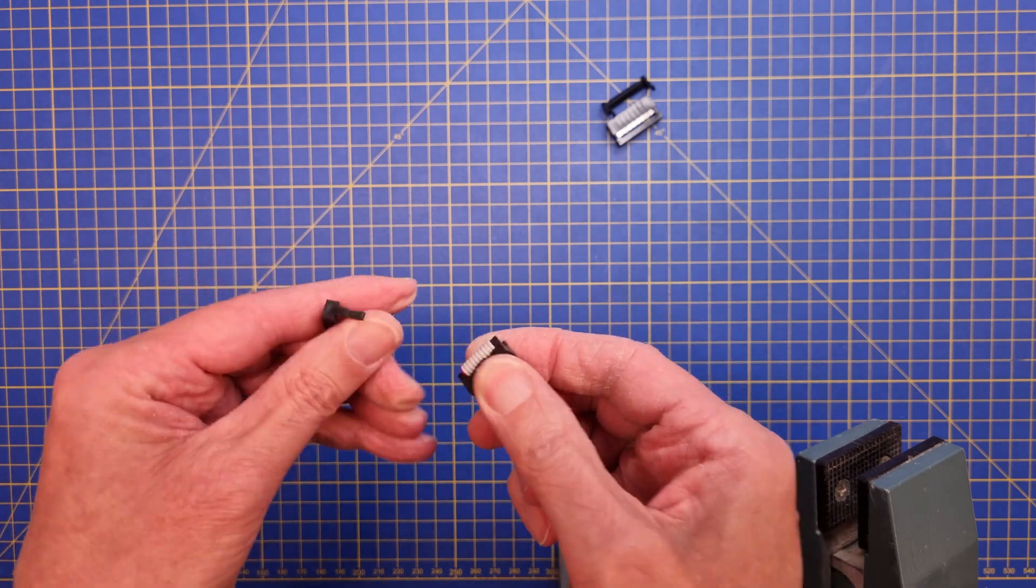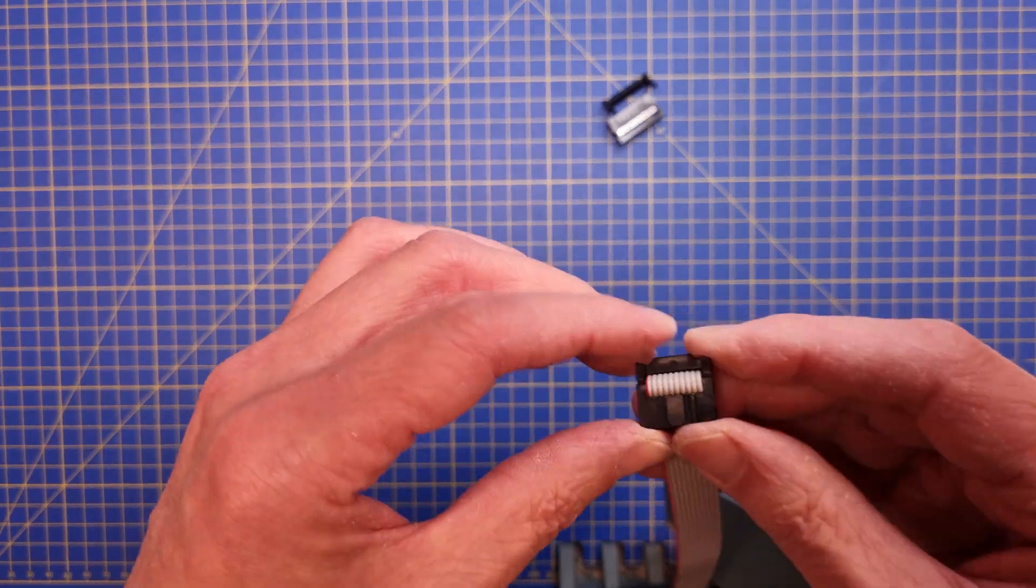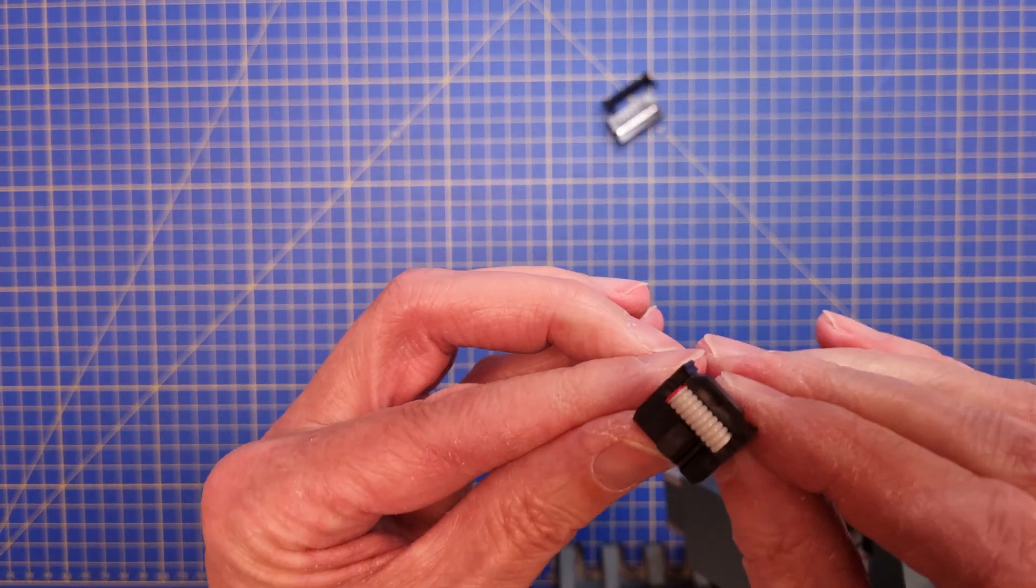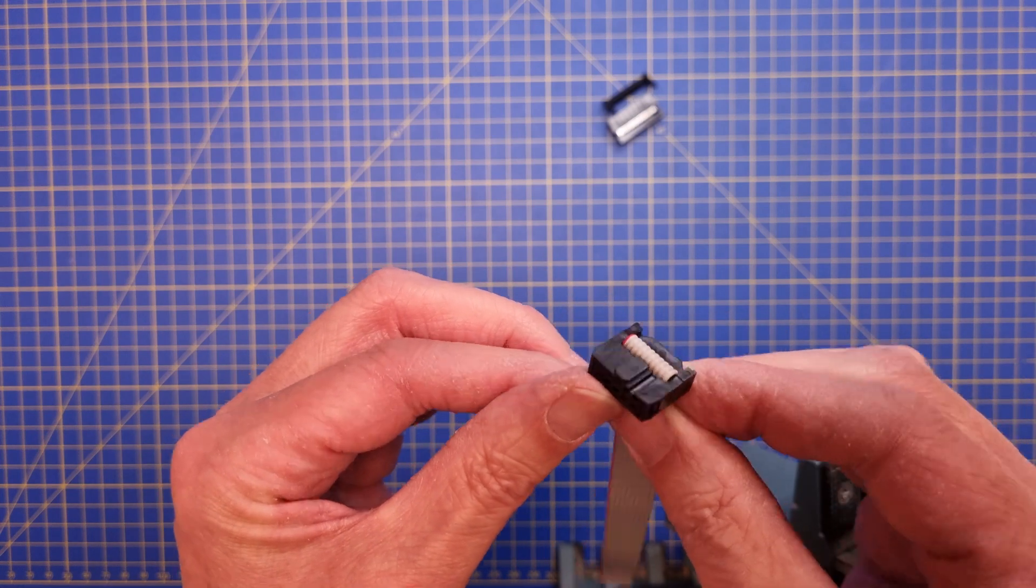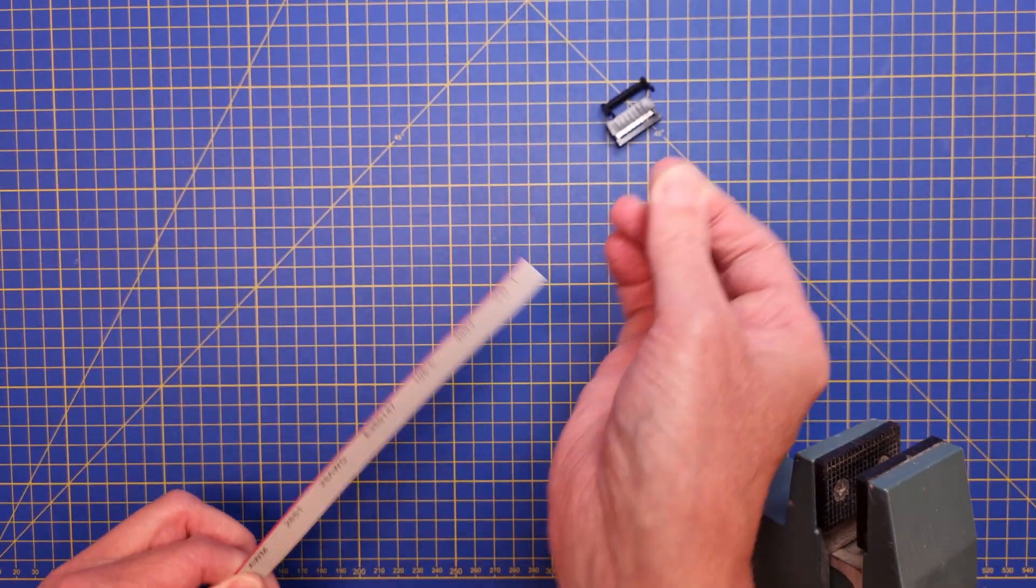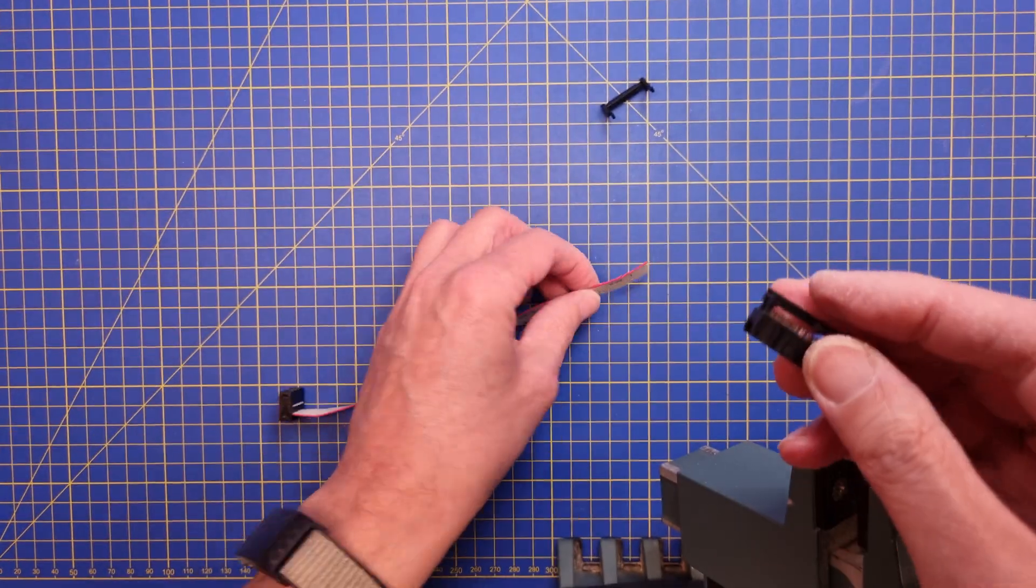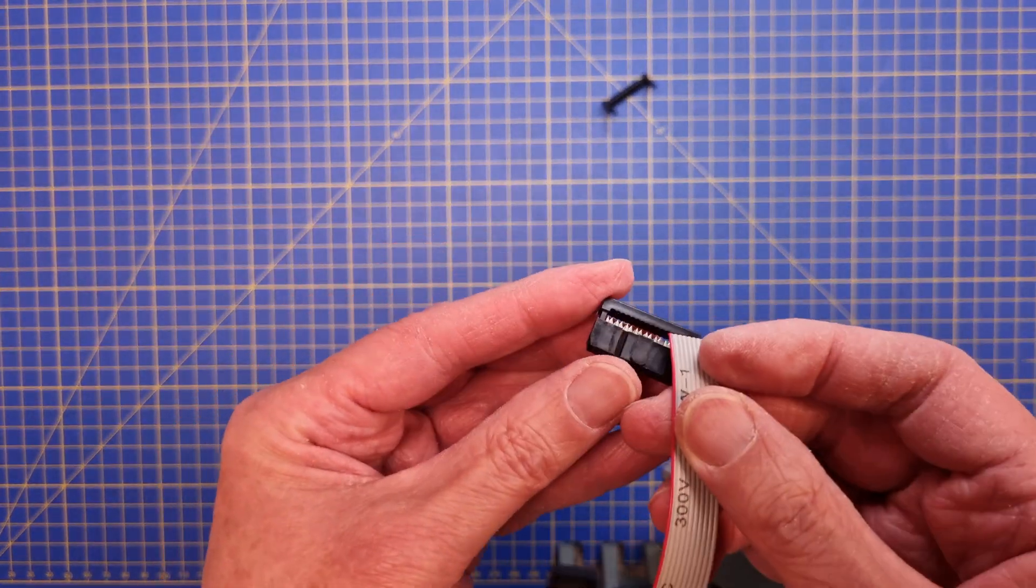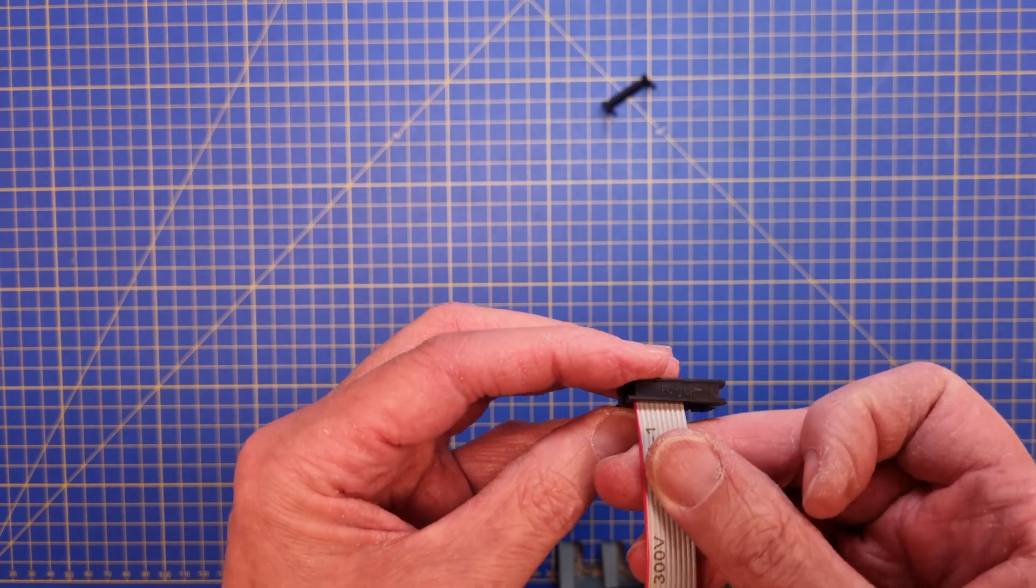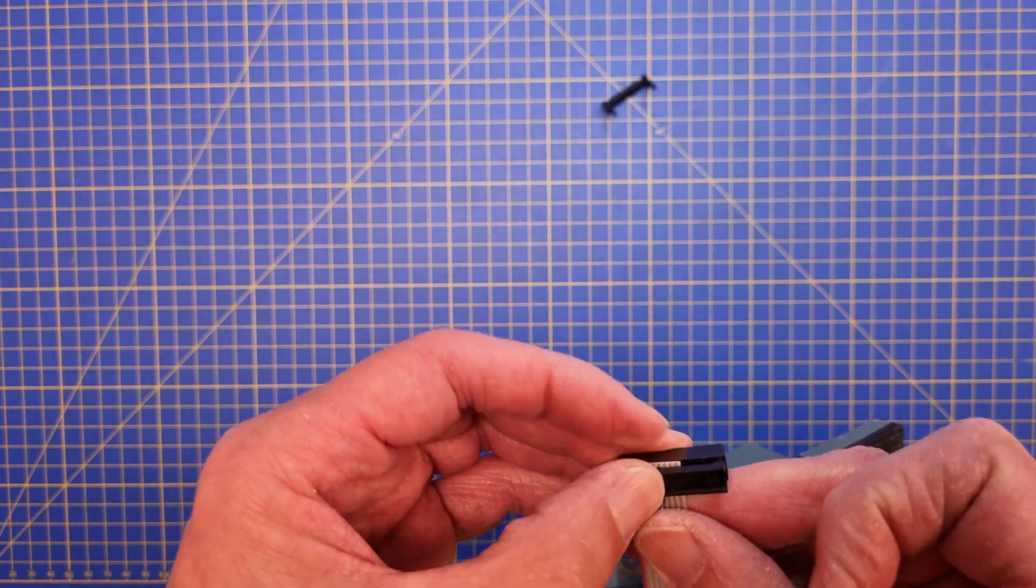After that I fold the cable over the top of the connector and snap the strain relief into place. The next connector is done in the same way as the previous one. Make sure that the cable is aligned properly, especially if you attach a 10-lead flat cable to a 16-pin IDC connector.